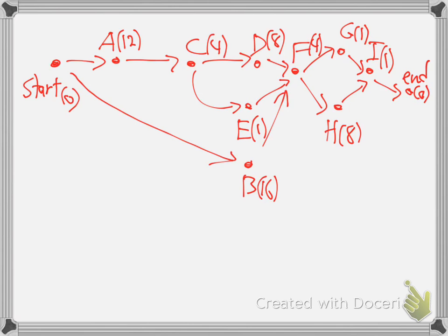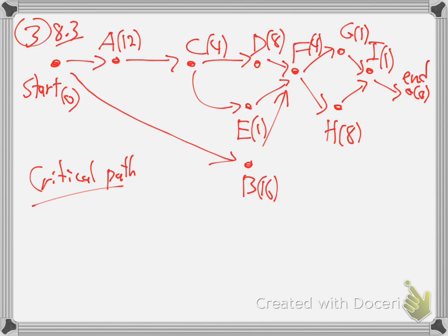And then, because they're saying this is number three — again in section 8.3 — they're saying to do the critical path method. So this is what you really want to get clear for the practice exam today and the real exam tomorrow: critical path means to do the backflow, add-up thing. You want to see how much the paths take. So this is where I start at the end and put the brackets — zero — and then kind of add backwards.